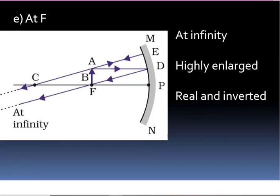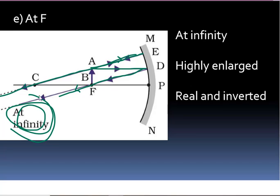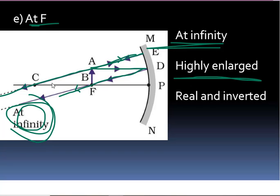Case 5: Object at focus F. The incident ray parallel to the principal axis reflects through the focus, and the second ray passes through the center of curvature. These two reflected rays appear parallel and will never actually meet, or we can consider they meet at infinity. The image is formed at infinity, is highly enlarged, real, and inverted.